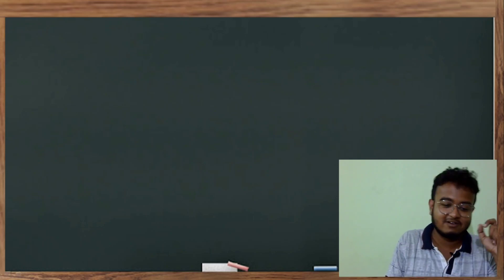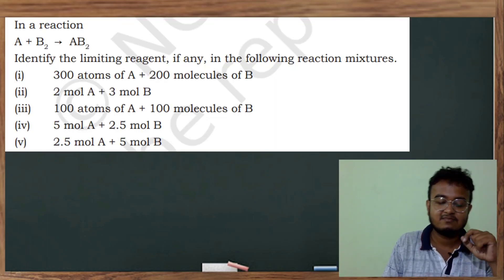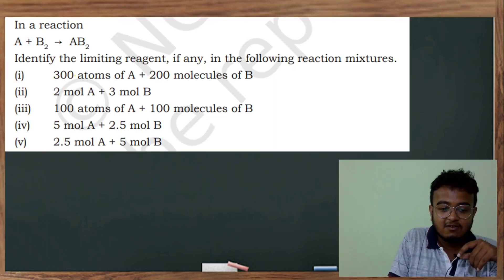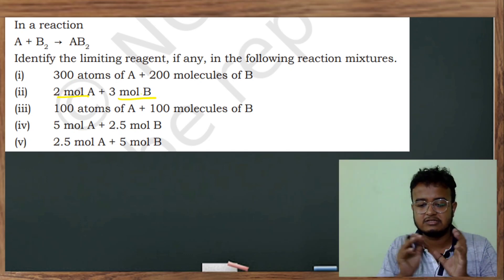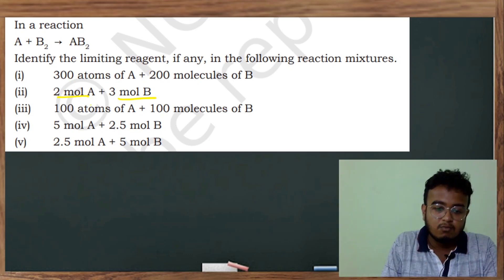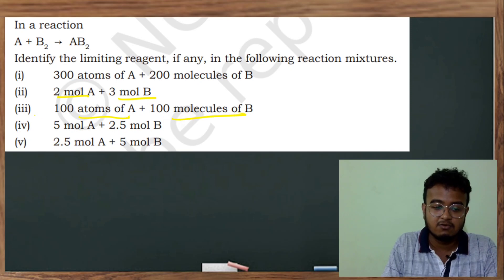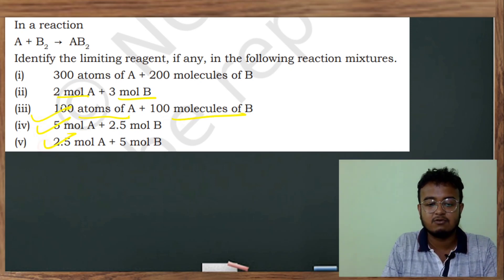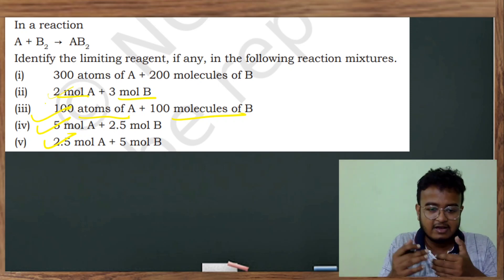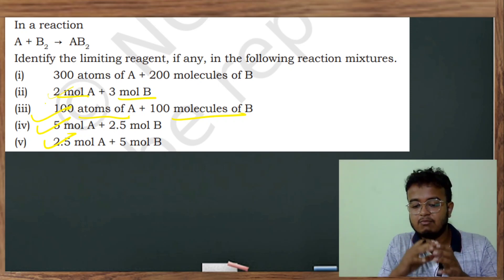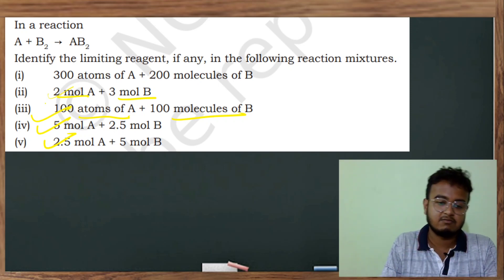Next: 2 mol A and 3 mol B — this is a direct query. Given 2 mol A and 3 mol B, this is the problem we need to solve for the limiting reagent.